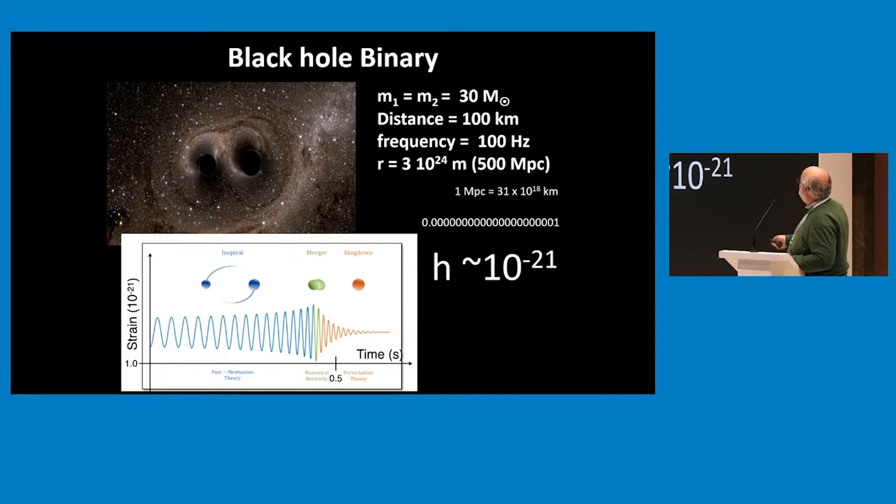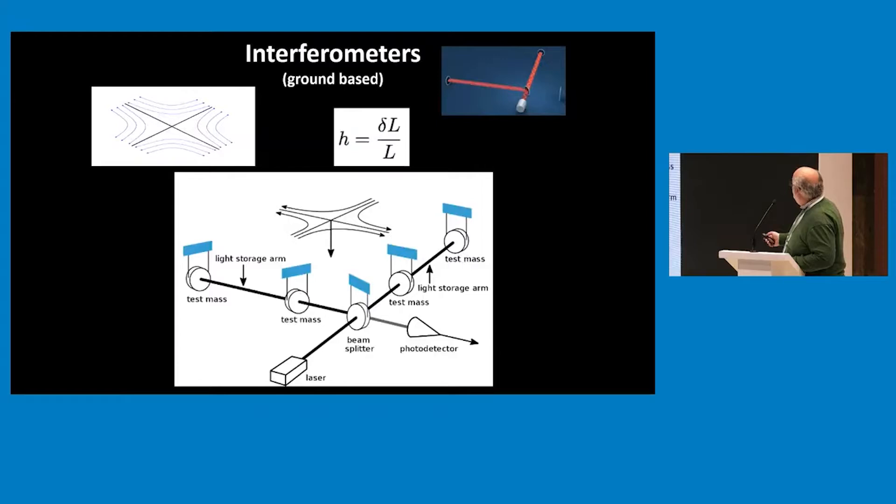As I said, the only way to see this is to go to cosmic scales. Now, you cannot take a ruler and measure 10 to the minus 21. What you have to do essentially is use interferometry, very precise interferometry, to see whether the gravitational wave that comes is going to change the relative size of the arms of interferometer.